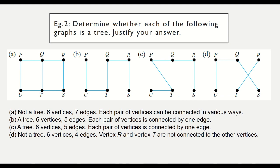Example 2: determine whether each graph is a tree. Diagram A is not a tree because it has six vertices but seven edges — we should only have five edges, since six minus one equals five. Diagram B is a tree: it has six vertices and five edges, meaning each pair of vertices is connected by exactly one edge.